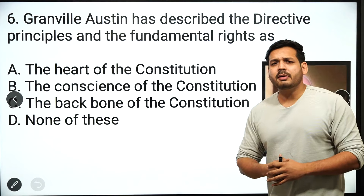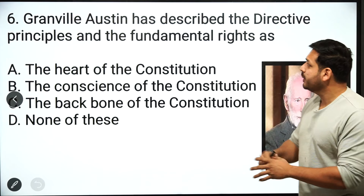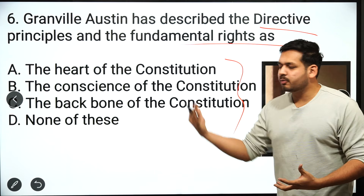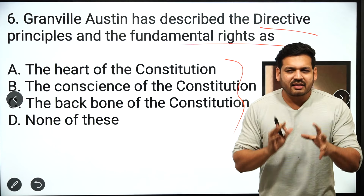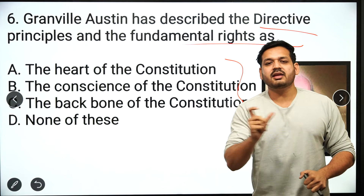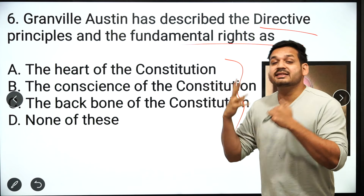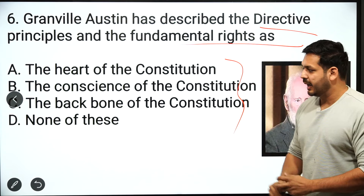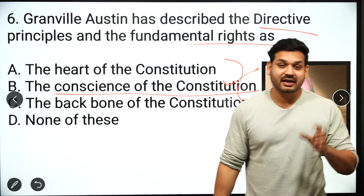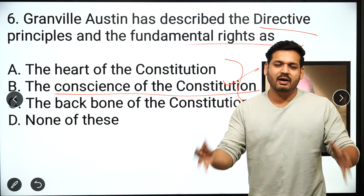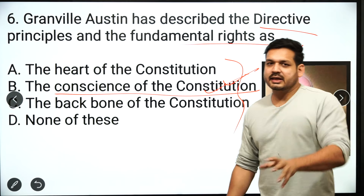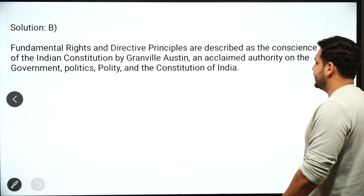The sixth question: I have written the name Granville Austin. What did he describe the DPSP and Fundamental Rights as? The options are Heart, Backbone, Conscience, or None of these. Such questions are asked a lot in State PCS and UPSC Assistant Commandant exams. The correct answer is option B — 'Conscience of the Constitution.' Granville Austin described DPSP and Fundamental Rights together as the Conscience of the Constitution.